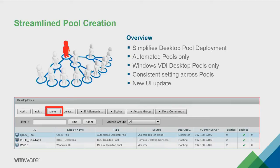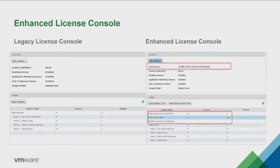We've added the ability to clone a VDI automated pool. If you've got link clone pools and need to stamp out five more that look the same, you can pick the pool, hit the clone button, and create a whole new pool based on it — no need to go through the entire wizard again. We've also added more licensing information in the console — an obfuscated view of the license key so you can see which pod you applied that license to, and both concurrent and named user counts are now shown in the console.